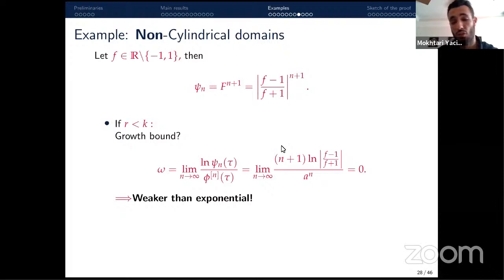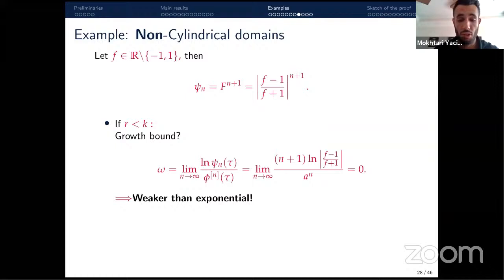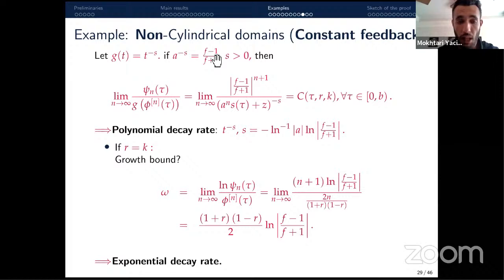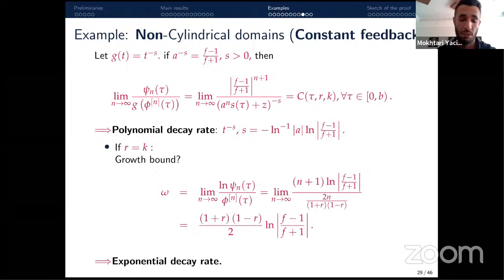Since the growth bound is zero, we cannot directly determine the decay rate and must look for an appropriate function g. Taking g(t) = t^(−s), we find that the equivalence condition holds and the energy decays polynomially with exponent s, given explicitly by a formula. This exponent exactly matches the one found by Fang and Lu in 2018.